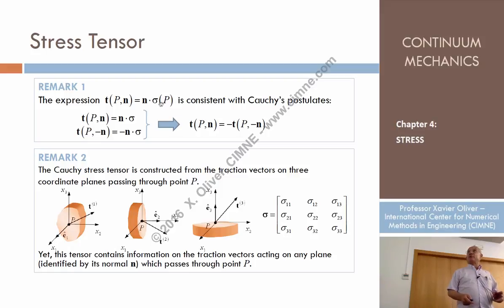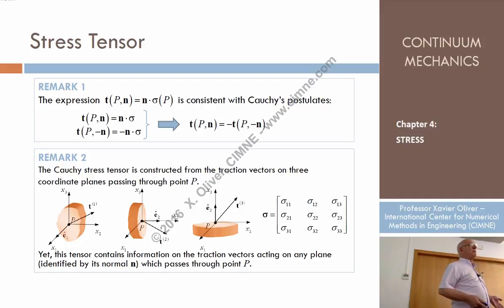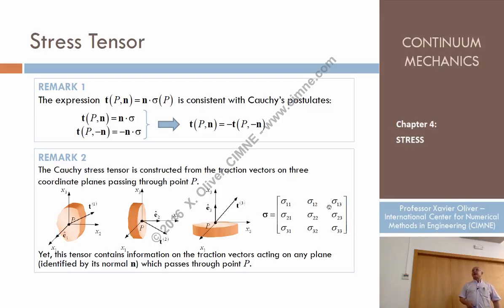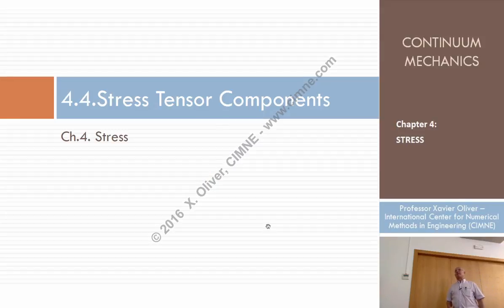This is relevant because if sigma depended on N, this equation wouldn't hold and the action-reaction principle wouldn't work. In summary: given a coordinate system, if I know the tractions on the three Cartesian planes acting on positive normals E1, E2, E3 and place them into the three rows of a matrix, I obtain the components of the stress tensor in that coordinate system.